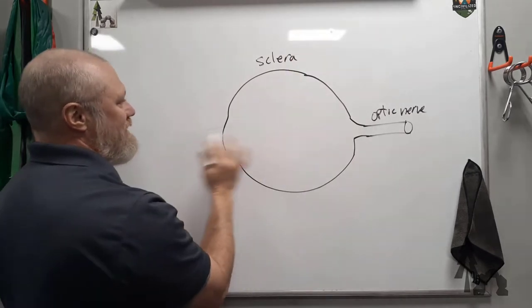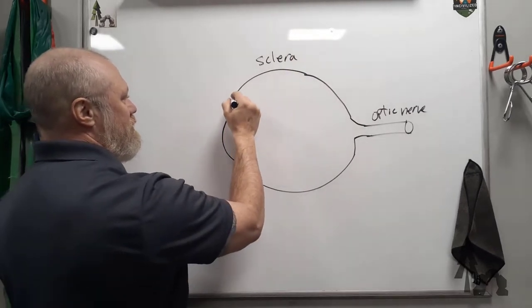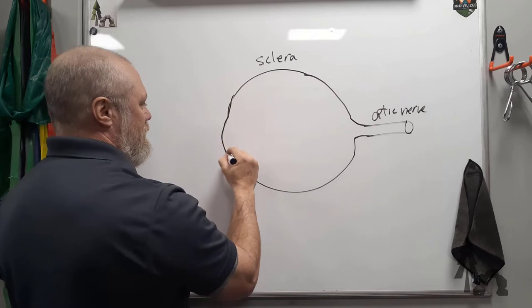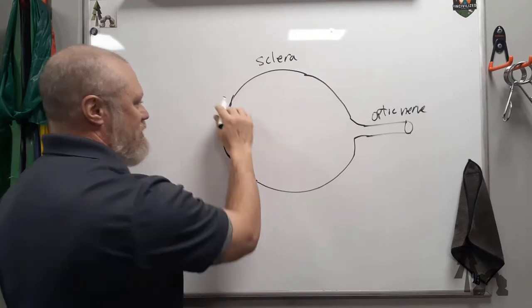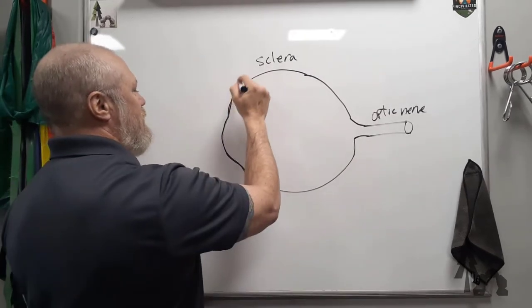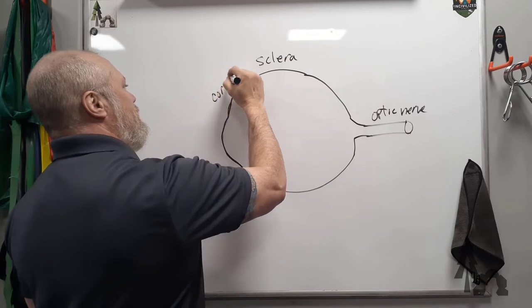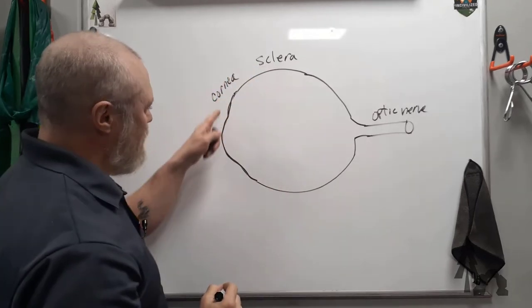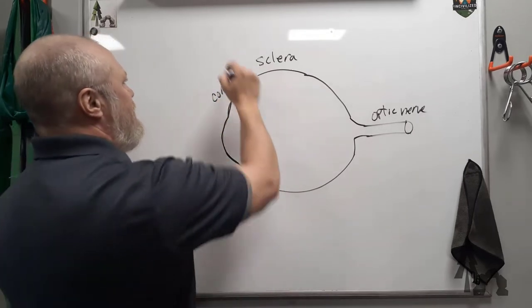And then you get about one-sixth in the front is going to be this clear portion up front which is called the cornea. So the cornea is this anterior, let's say one-sixth.